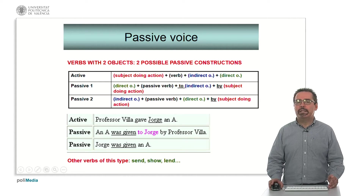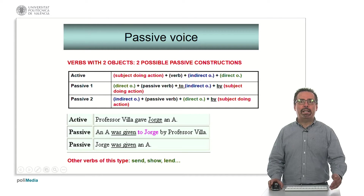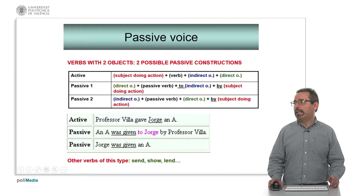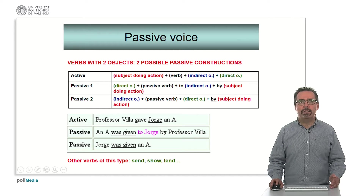Other similar verbs that can form a double passive sentence of this type are: send, show, lend. These have in common that it is to send something to somebody, to show something to somebody, etc. — they have two different objects. In the case of 'Professor Villa gave Jorge an A', the most common passive sentence is the second one, which does not exist, for example, in the Spanish language.